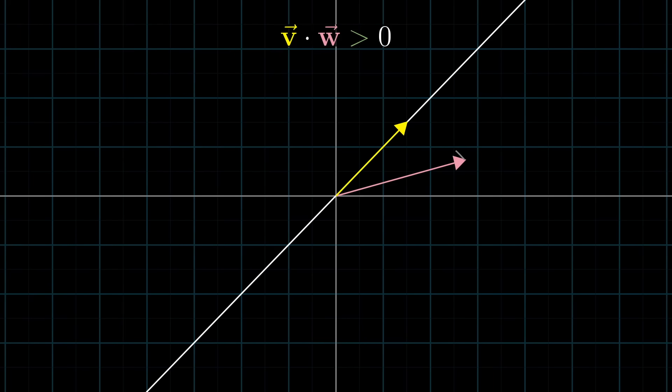So when two vectors are generally pointing in the same direction, their dot product is positive. When they're perpendicular, meaning the projection of one onto the other is the zero vector, their dot product is zero. And if they point in generally the opposite direction, their dot product is negative.